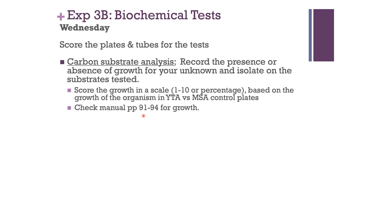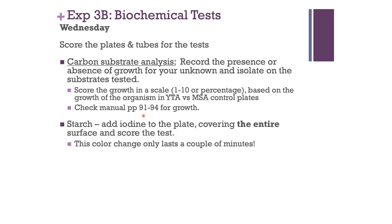You can use a percentage scale, a 1-to-10 scale, or plus signs — five plus signs for extremely strong growth, one plus sign for weak growth. It is up to you. But look at the manual, pages 91 and 94, where bacteria are cataloged based on percentages of growth. Use a percentage or 1-to-10 scale to approximate that for easy comparison.